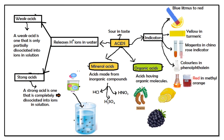Acids are substances that can release H⁺ ions in water. There are weak acids and strong acids. Strong acids dissociate completely into ions, whereas weak acids partially dissociate. The mineral acids like HCl, H₂SO₄, and HNO₃ are strong acids, whereas vinegar is a weak acid. In indicators, acids turn blue litmus red, retain the yellow color in turmeric, turn china rose indicator magenta, remain colorless in phenolphthalein, and change methyl orange to red.